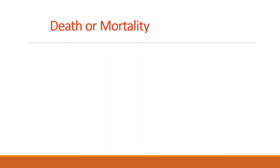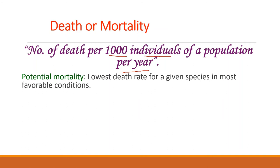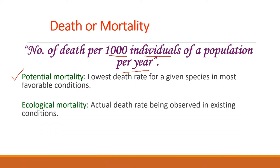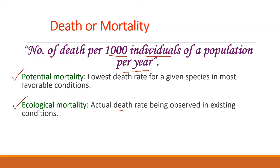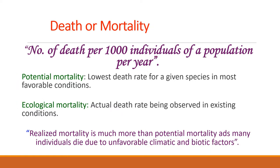Death or mortality is commonly expressed as the number of deaths per thousand individuals of a population per year. The lowest death rate for a given species under most favorable conditions is called potential or minimum mortality. Ecological mortality is the actual death rate observed under existing conditions, also known as realized mortality. Realized mortality is always much greater than potential mortality, as many individuals die due to unfavorable climatic and biotic factors. Natality always increases population size while mortality always decreases it.